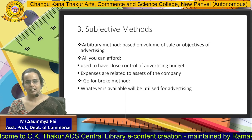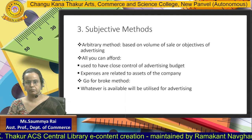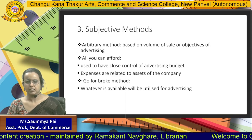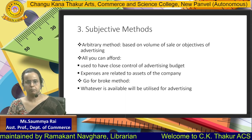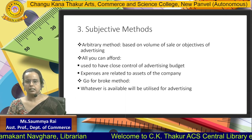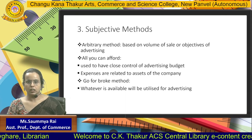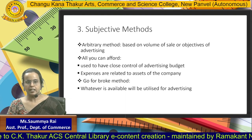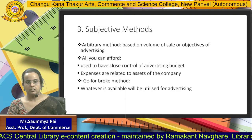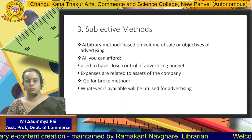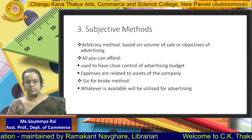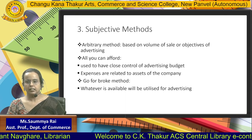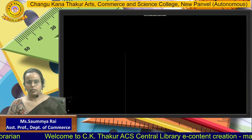The third is the subjective method, with three approaches. The argument method: based on sales volume or the objectives of the advertisement, company management takes a decision and sets the advertisement budget. All you can afford: generally used by small or state-level companies that have very close control of their advertisement spending. The budget is directly related to the assets of the company. Go for a block method: used when the company is very desperate to advertise the product and allocates whatever funds they have entirely for advertisement. Thank you so very much.